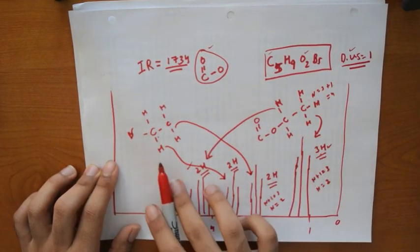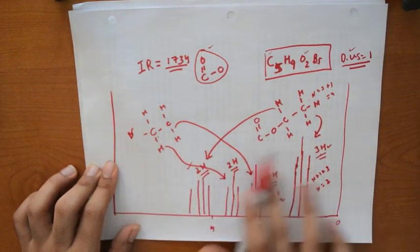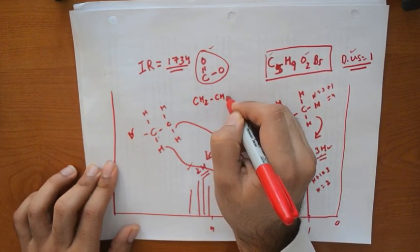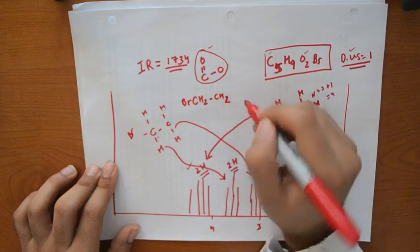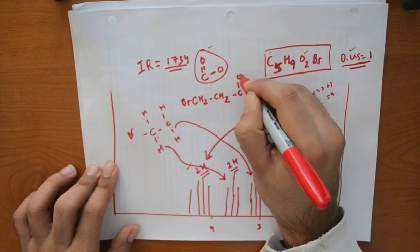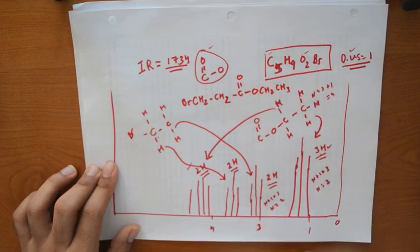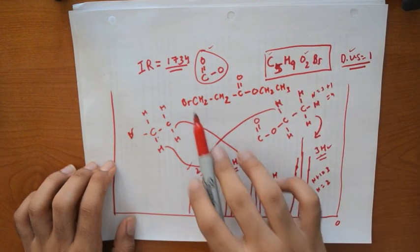Now all you got to do is connect the pieces. So we got a CH2 with a CH2 which has a Br, which has a C double bond O and O-CH2-CH3. That's how you would do a typical NMR problem.